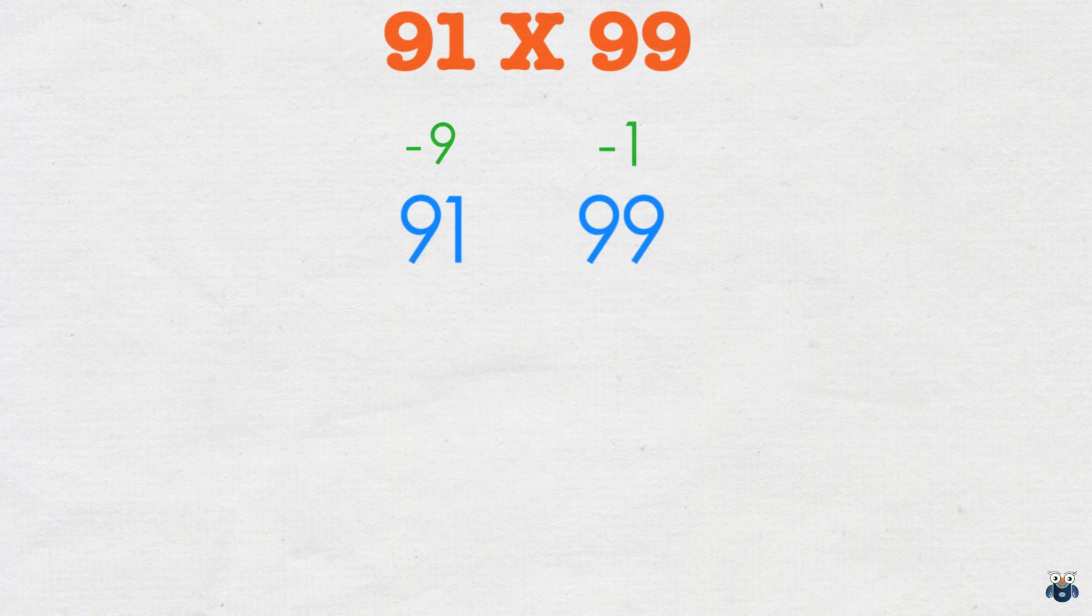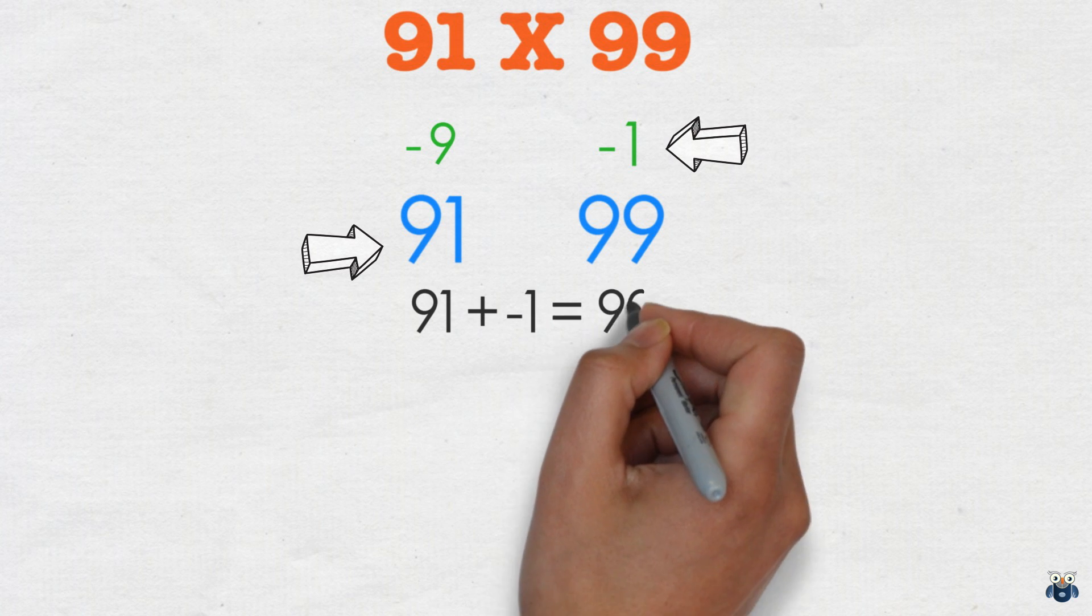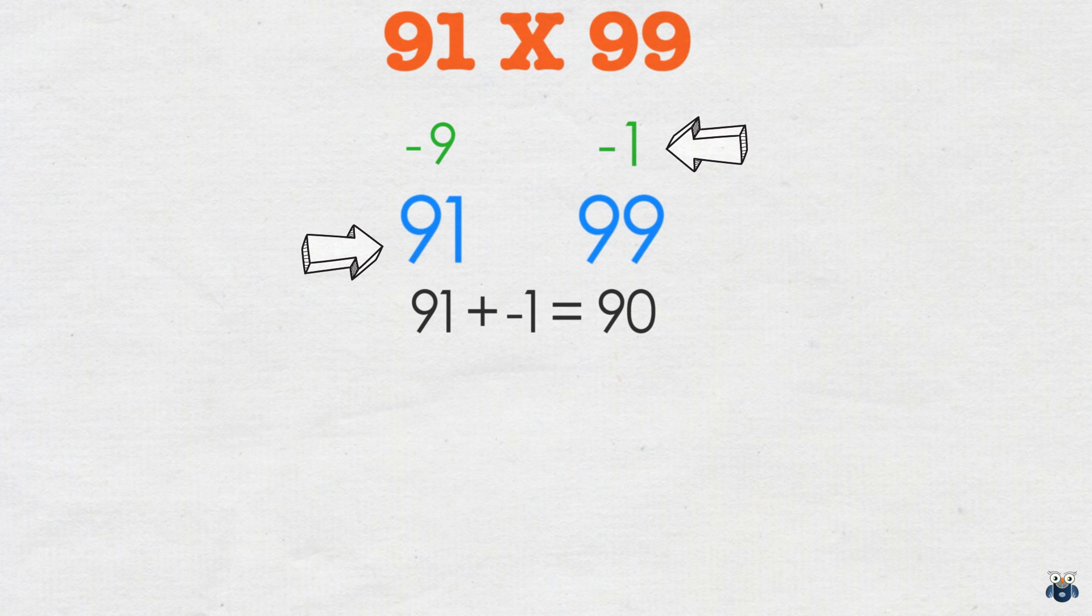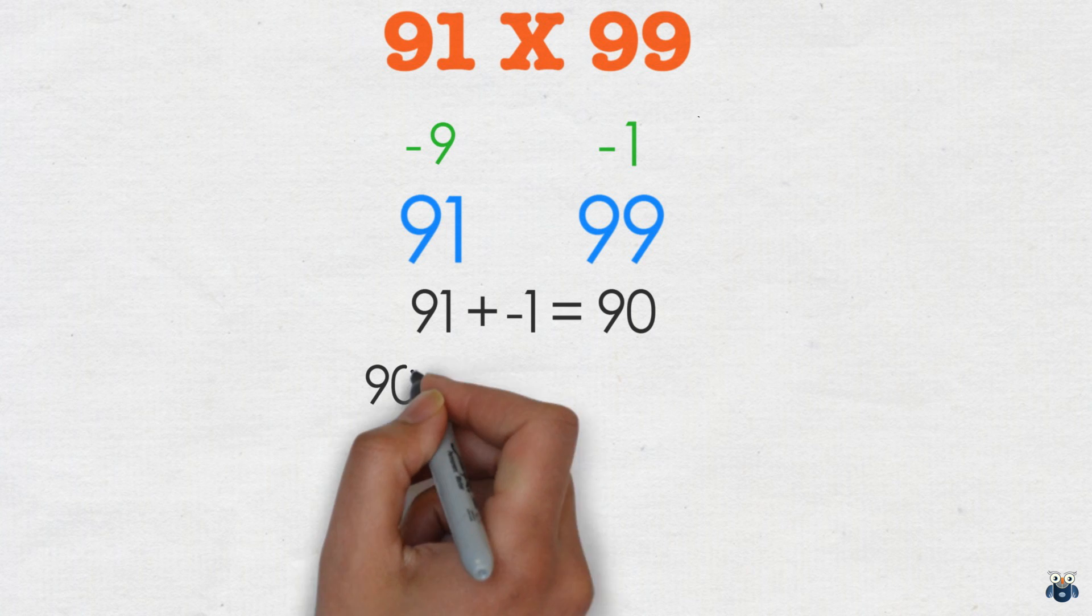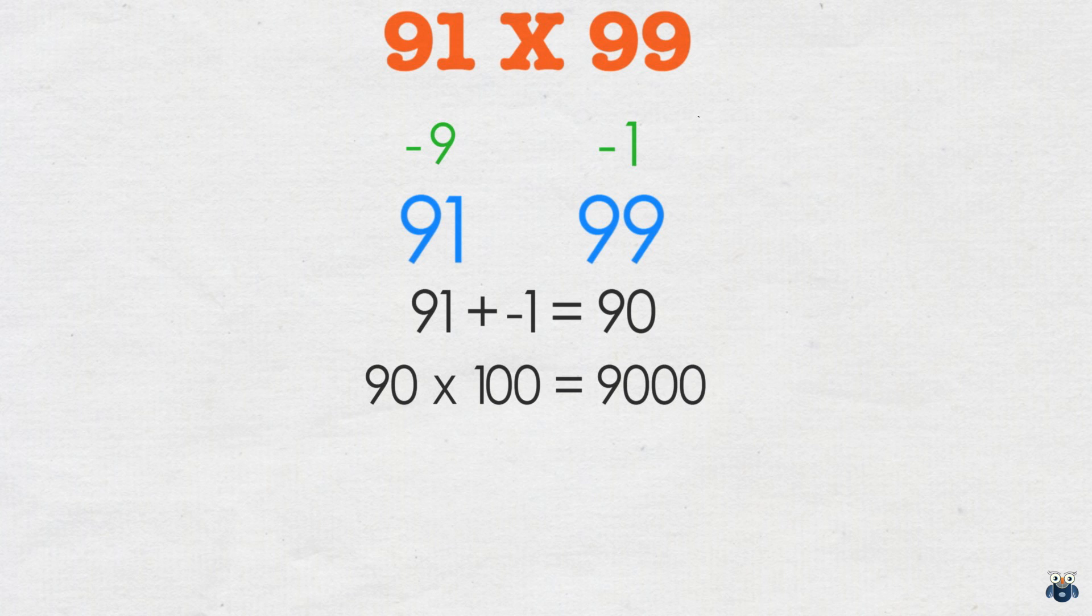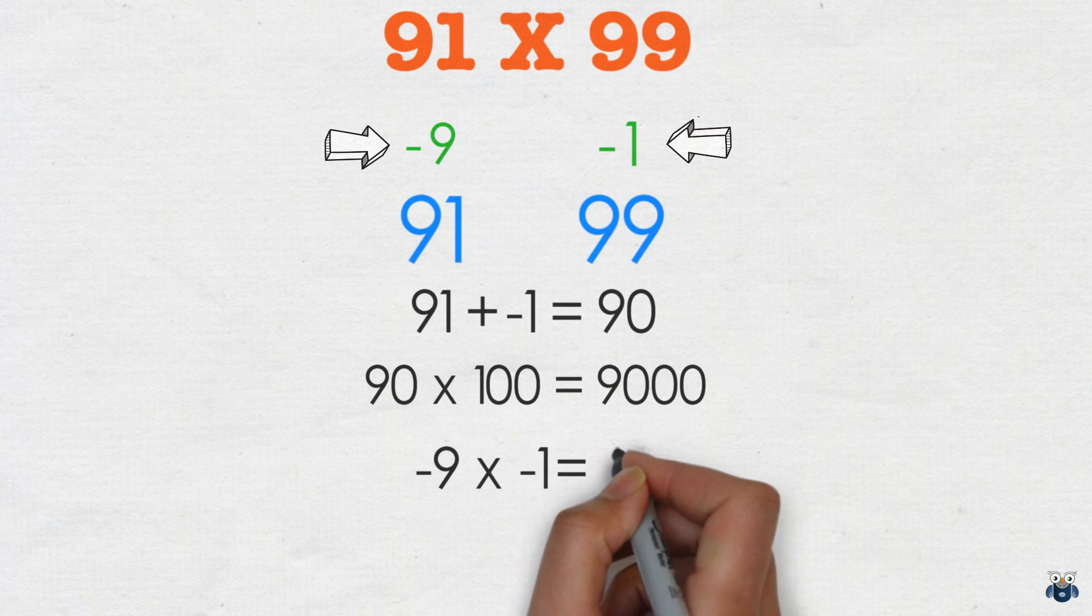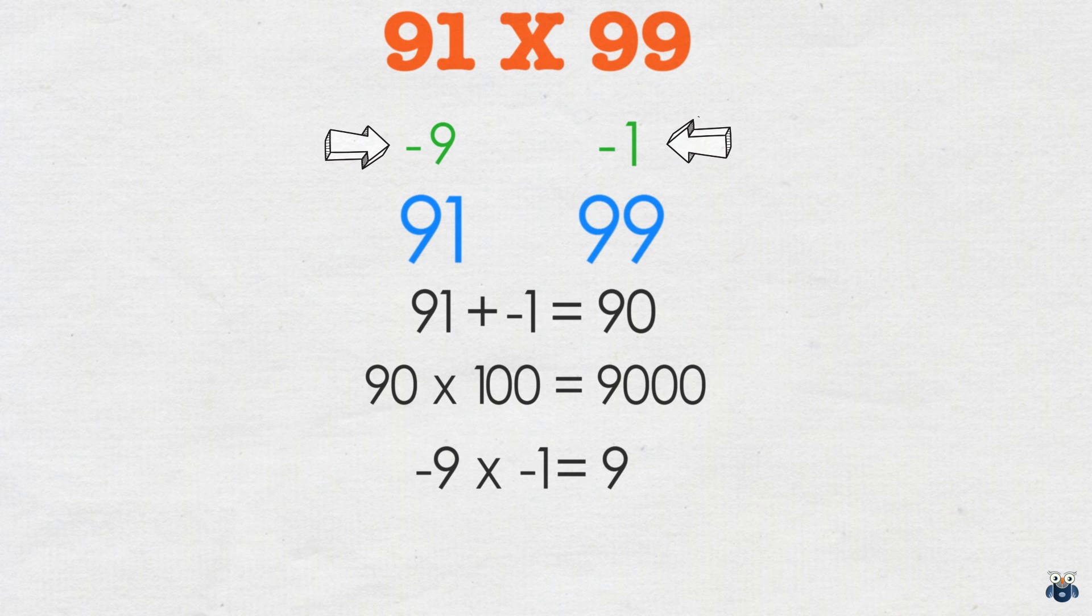Now we add the first number and the second deficit. So 91 plus minus 1 is 90. We then multiply this result with our base. 90 times 100 is 9000. We then multiply the two deficits. Minus 9 times minus 1 is 9. Finally we add these two results to give us our final answer which is 9009.